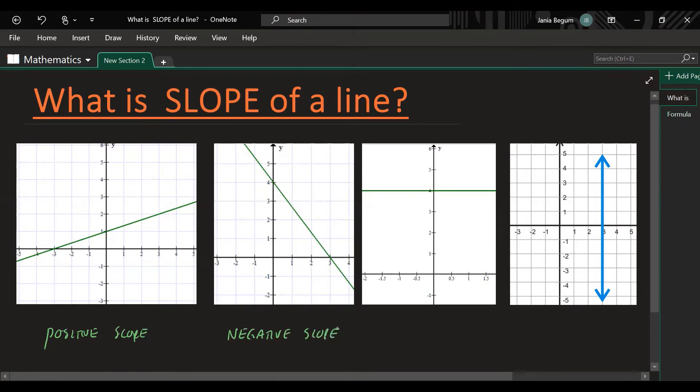And the third image, it's a flat line. So this line has a zero slope.